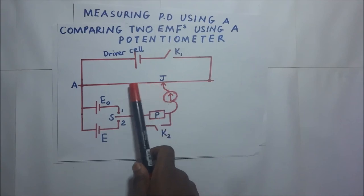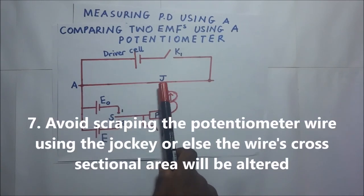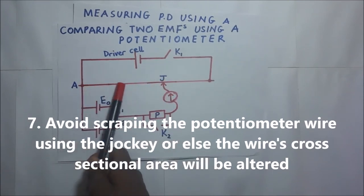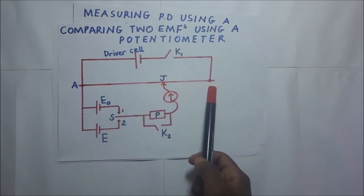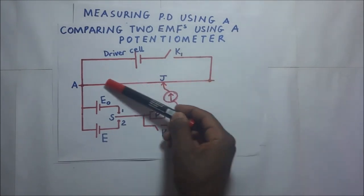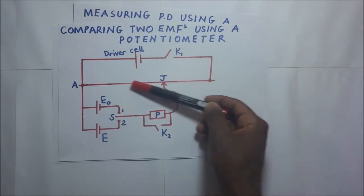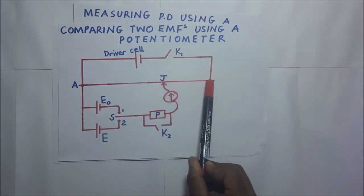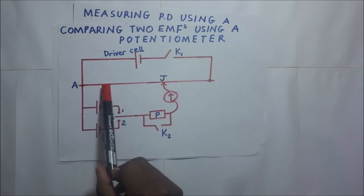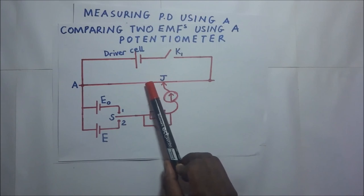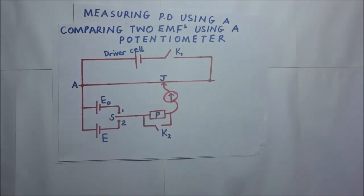As you try to find the balance point, avoid sliding the jockey while it is in contact with the wire, because you will end up scraping off part of the wire. When you scrape off part of the wire, it makes the slide wire non-uniform. It is important that the wire has a constant cross-sectional area throughout in order to get accurate results. Scraping the wire distorts its uniformity, and when uniformity is distorted, the results you get won't be accurate.